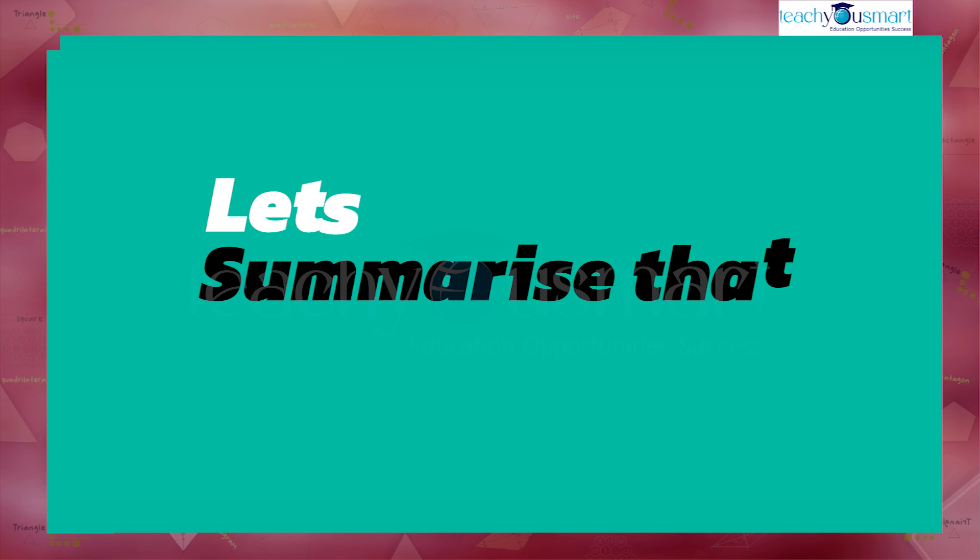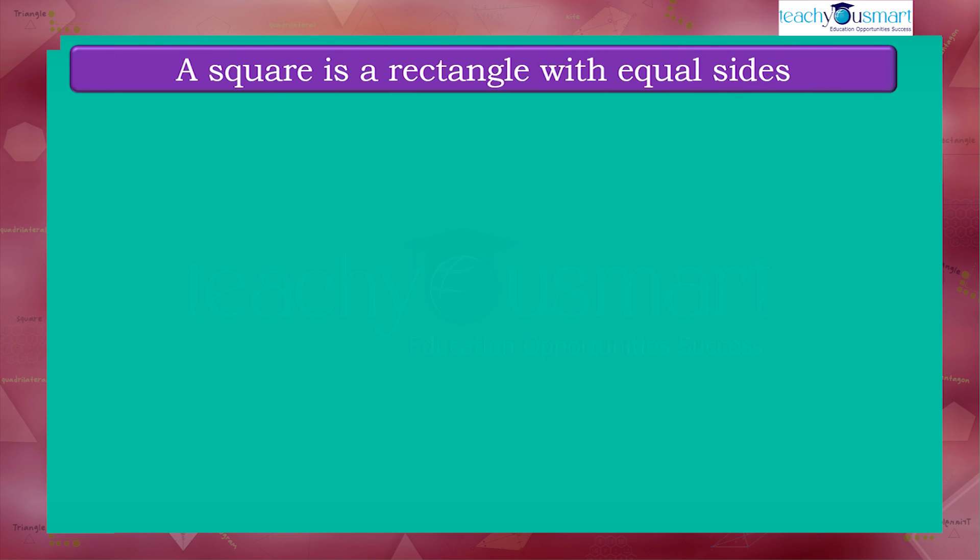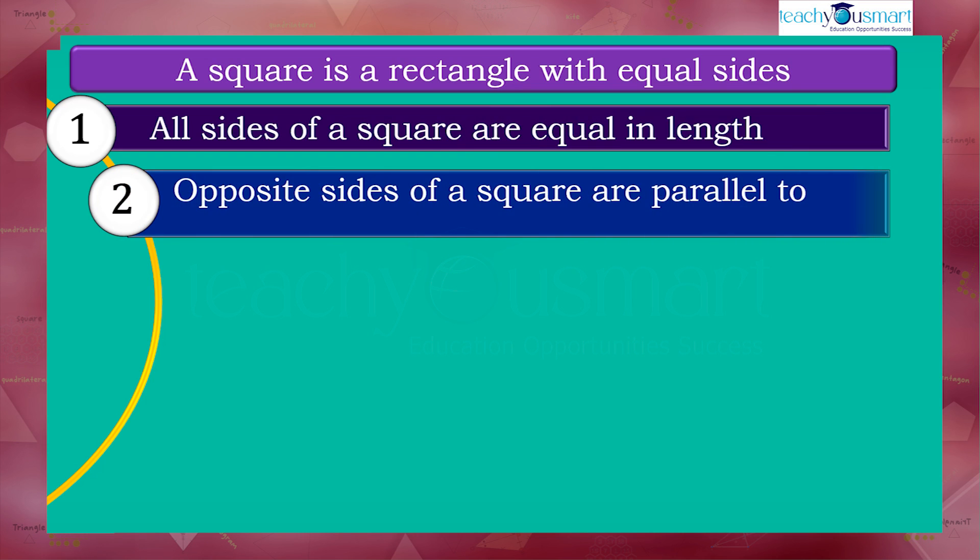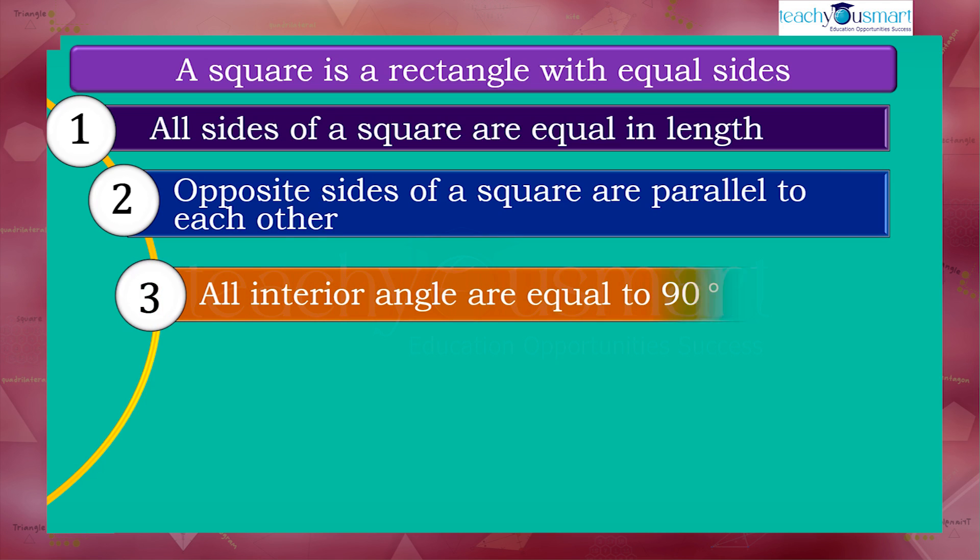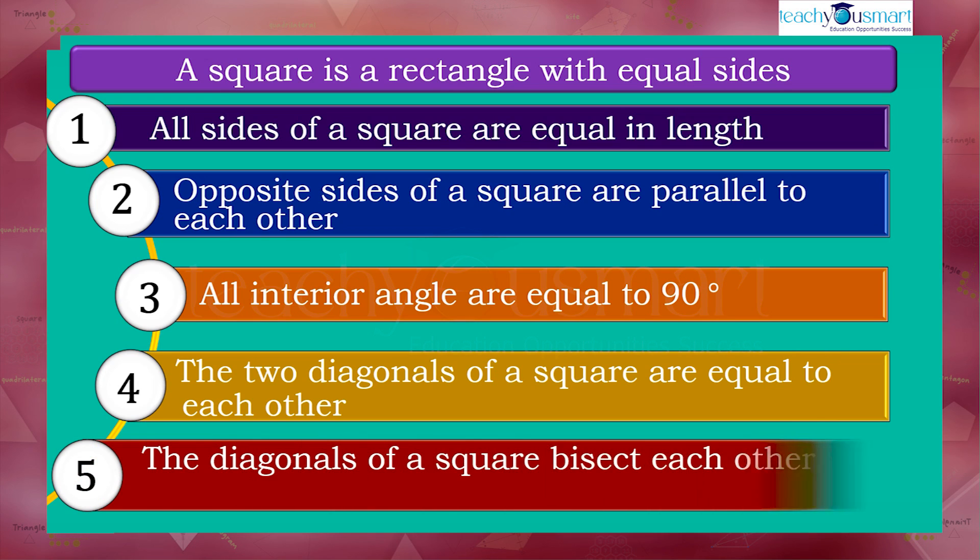Let's summarize that. A square is a rectangle with equal sides. A square has the following properties: (1) All sides of a square are equal in length. (2) Opposite sides of a square are parallel to each other. (3) All interior angles are equal to 90 degrees. (4) The two diagonals of a square are equal to each other. (5) The diagonals of a square bisect each other perpendicularly.